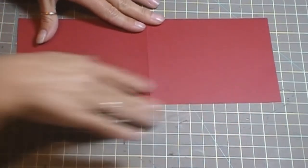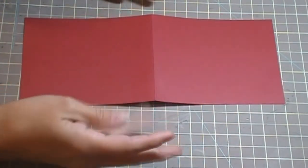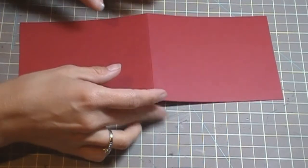I have a piece of 4 1⁄4 by 11 inch sheet of cardstock that is cut the long way and then scored down the middle.